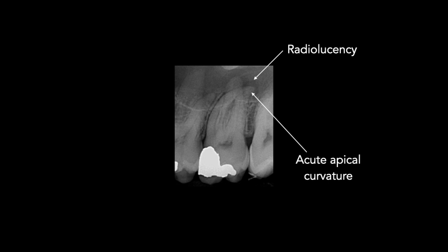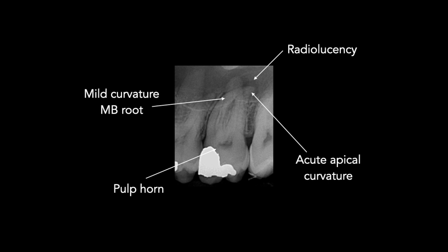There is a pulp horn in the mesial aspect of the pulp chamber and this is quite close to the base of the amalgam restoration. Perhaps this is a route via which bacteria entered the root canal system by micro-leakage. The mesial buccal canal appears to be moderately curved; however, we always have to bear in mind that there are often very acute curvatures in the buccopalatal or buccolingual plane that you cannot see on a radiograph.